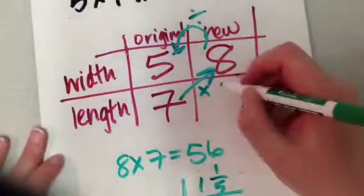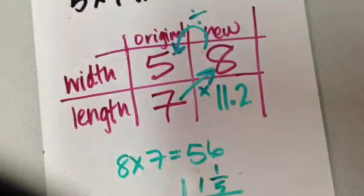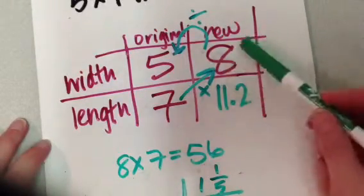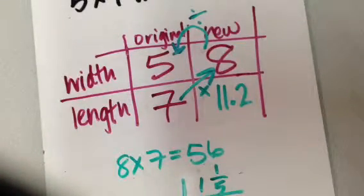So if I go back to my chart over here, my new length would be 11.2 inches. So that's how we figure the unknown term. We're going to multiply the ones that are diagonal across from each other and divide by whatever is left. Let's look at another example here.